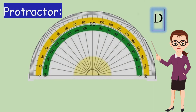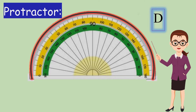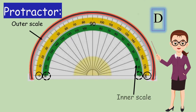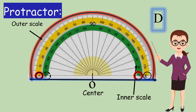The protractor has a shape like the English alphabet D. The curved side of the protractor is marked from 0 degrees to 180 degrees. It has two scales: outer and inner. The outer scale starts at 0 degrees from the left and the inner scale starts at 0 degrees from the right. The straight side has a midpoint marked as O. AOB is the baseline of the protractor.